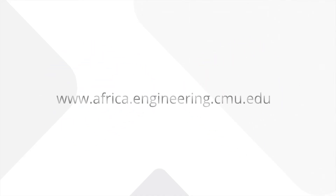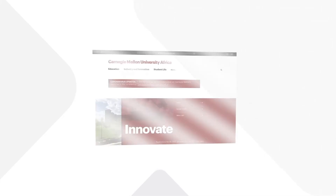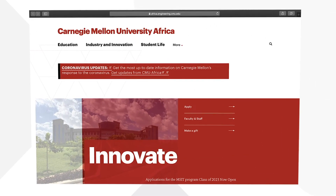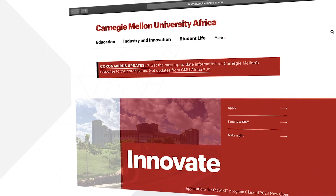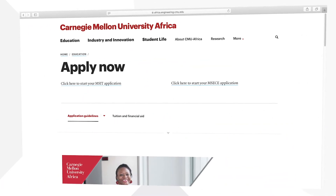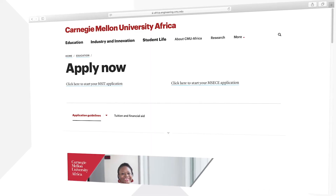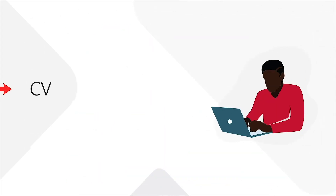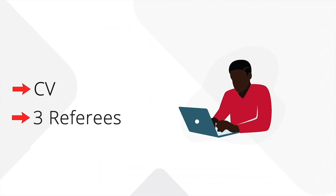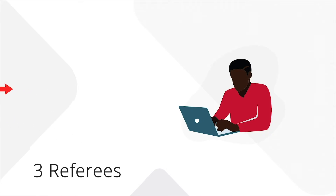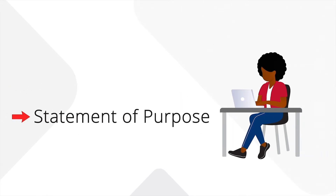Now that you are sure you have these two requirements, let's look at the online application process. Once you have filled in your basic information, you will be asked to do the following. First, upload your CV and provide contact information for three referees that will support your application. Second, upload a statement of purpose.